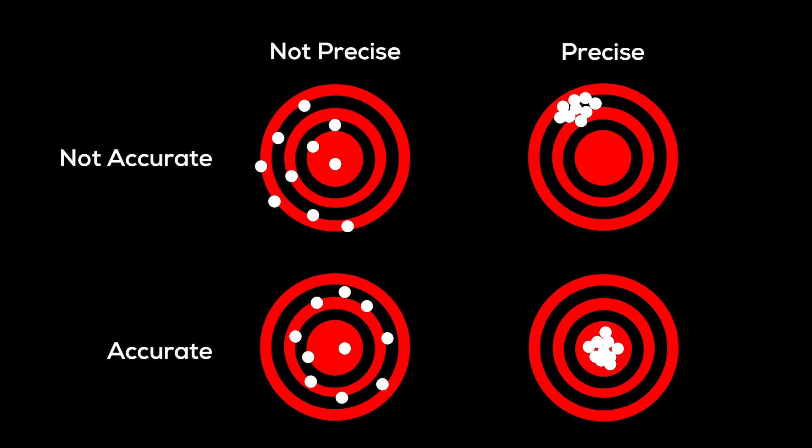In summary, accuracy describes how close the average of a set of measurements is to the true value, while precision describes how close each individual measurement is to the average of all the measurements.